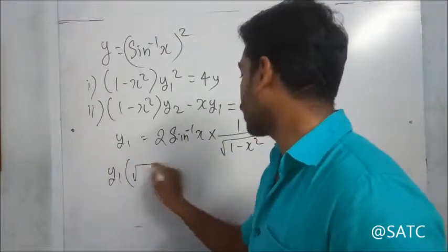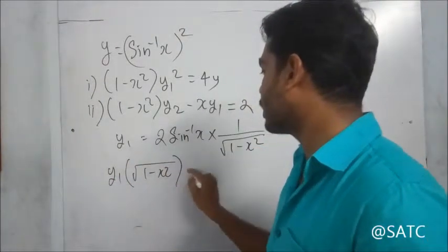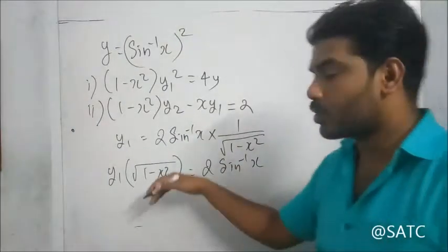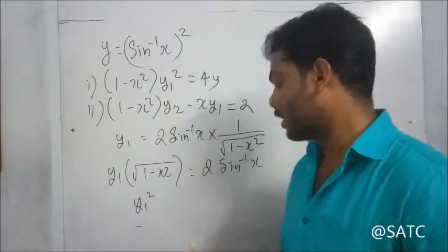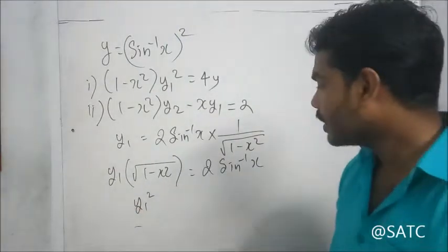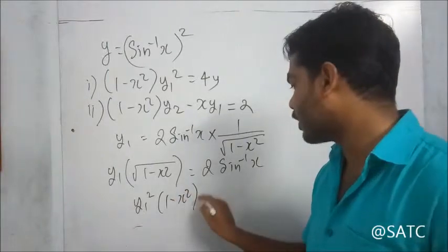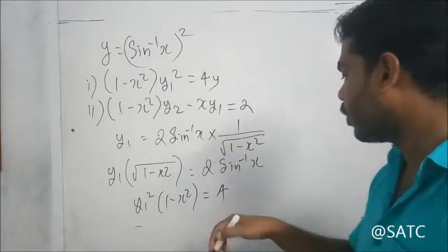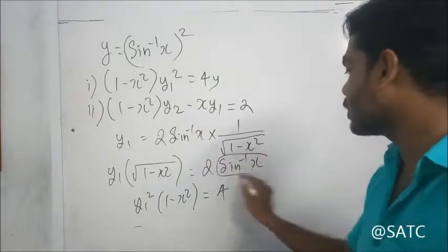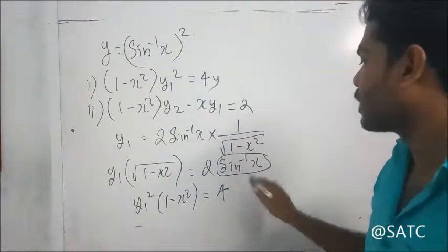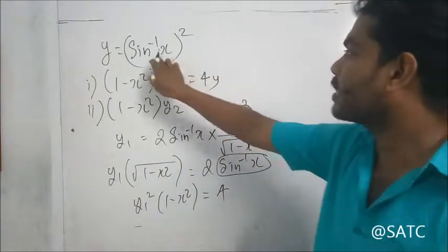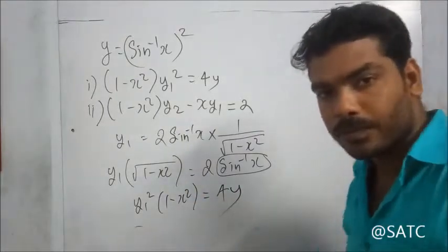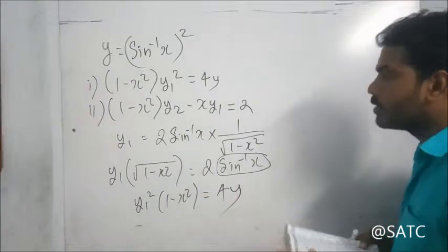So y1 times root of (1 minus x square) equals 2 sin inverse x. Squaring both sides: y1 square into (1 minus x square) equals 4 sin inverse x whole square, which equals 4y. So the first equation is proved.